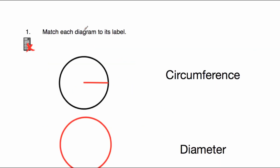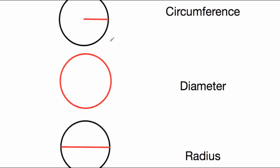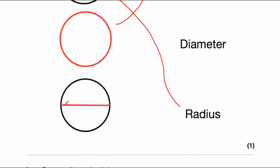Question one asks us to match each diagram to its label. We've got the diagrams on the left and the labels on the right. Our first circle has a line going from the center of the circle to the edge — that is the radius, which is at the bottom of our labels. Our second circle has the whole outside in red, so that's the circumference. And the bottom diagram has the diameter labeled going through the center from one side to the other.